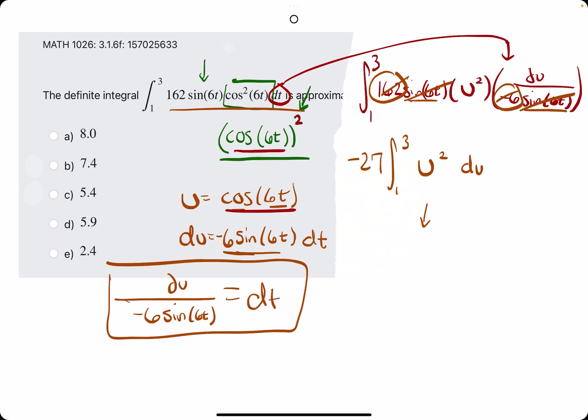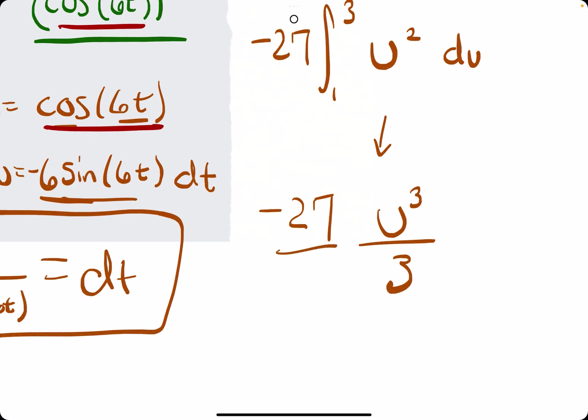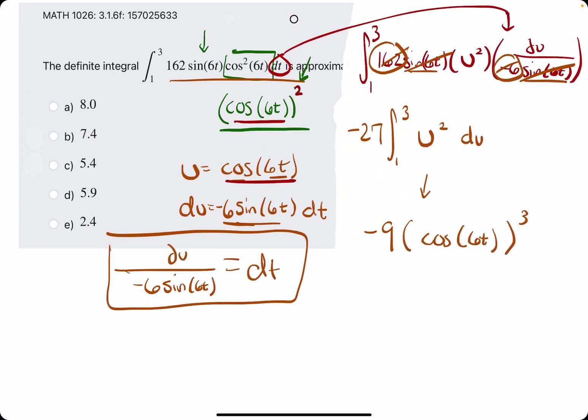So, we take the antiderivative. We leave the negative 27. We add 1 to the exponent. Divide by that number. And that's pretty much it. Let's go ahead and take negative 27 divided by 3. We can sort of combine these, right? Negative 27 over 3 is negative 9. So, we have negative 9 U³ as our antiderivative. So let's plug in U. Negative 9 U³. So we have U was cosine of 6T. And now it's being cubed. All right. So, now we evaluate this from 1 to 3.